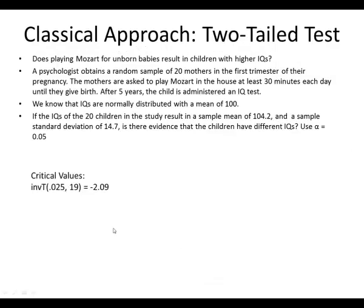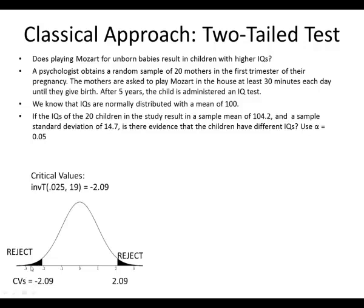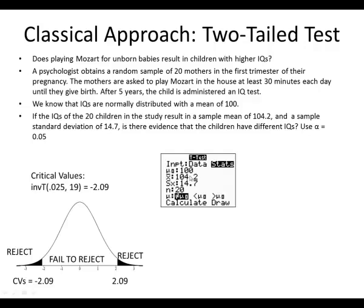For a two-tailed test, it's very similar, except we take alpha and divide it by 2 because we have area on both the left and right. Alpha is 0.05, so we divide by 2 to get 0.025 — there is 0.025 to the left and 0.025 to the right. We use inverse T because this is a mean problem. With area to the left of 0.025 and degrees of freedom from sample size minus 1, we get negative 2.09 and positive 2.09 for the two-tailed test. If our test statistic is smaller than negative 2.09 or greater than 2.09, we reject. If it is between these two values, we fail to reject.